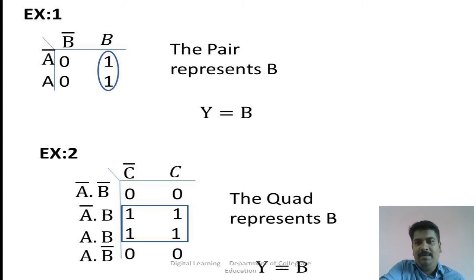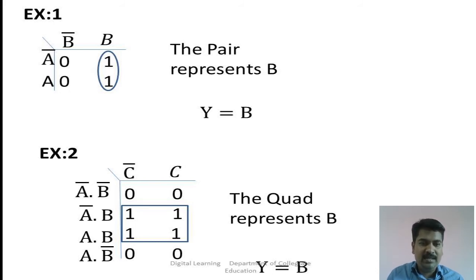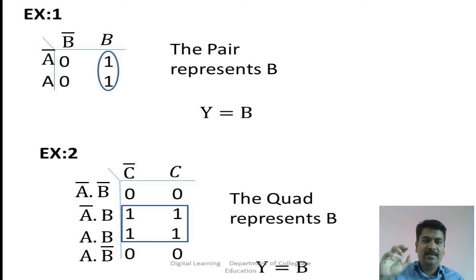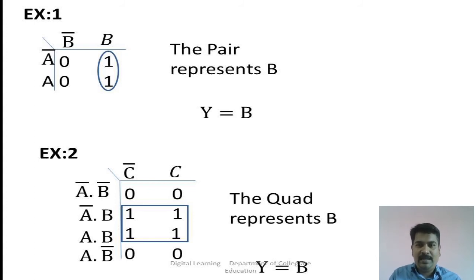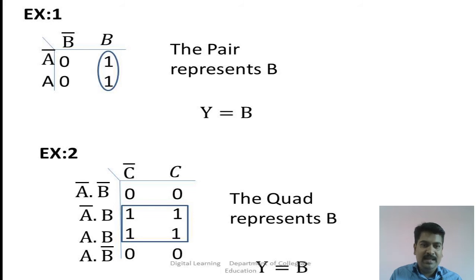For the first example, I have already written a two-input Karnaugh map. I get two adjacent 1s — a pair. Encircle this pair. After encircling, write the equation. This pair includes A-bar and A columns. A-bar·B plus A·B — taking B common, A-bar + A equals 1, so we are left with just B. The output equation for this first example is simply Y = B.